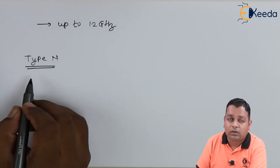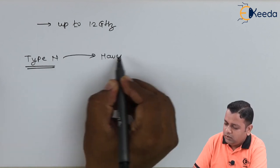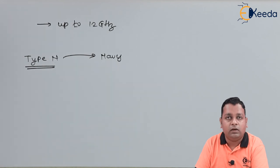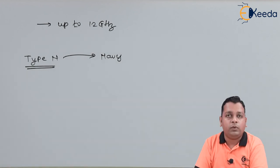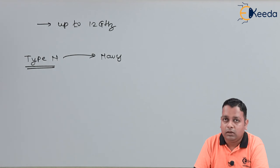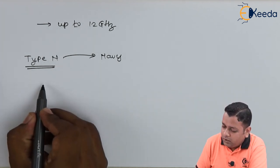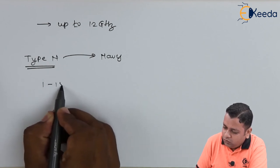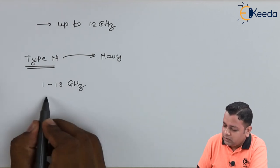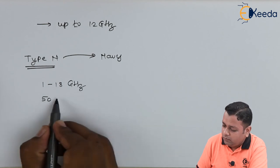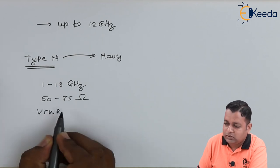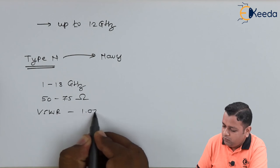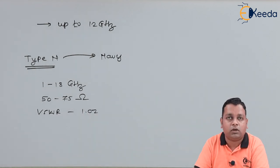At last we have the seventh type of connector called Type N, where N stands for Navy. Most of the microwave coaxial connectors we have discussed were invented during the time period of World War II, hence all these military applications are involved in giving specific names to the connectors. The operative frequency range of the Type N connector is 1 to 18 gigahertz, the characteristic impedance is 50 to 75 ohms, and the VSWR is extremely low with a value of 1.02 — as it is a ratio, it has no measurement unit.